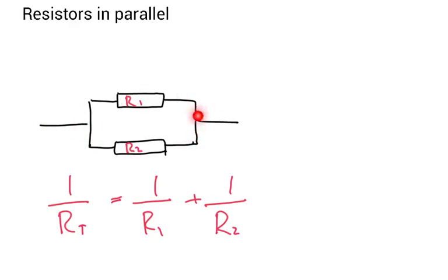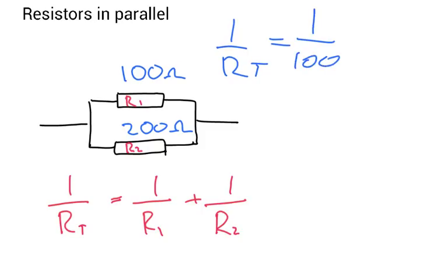Let's imagine in an example that R1 is equal to 100 ohms and R2 is equal to 200 ohms. So let's apply our equation. Well, 1 over RT is equal to 1 over 100 plus 1 over 200.